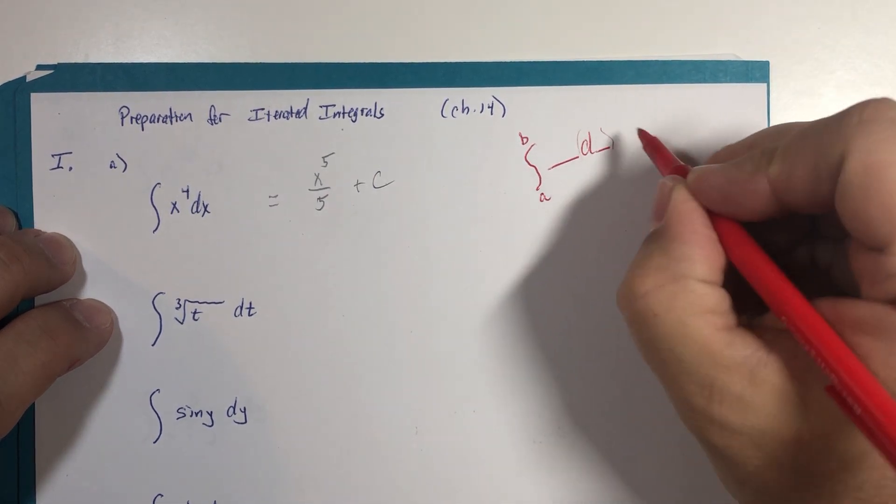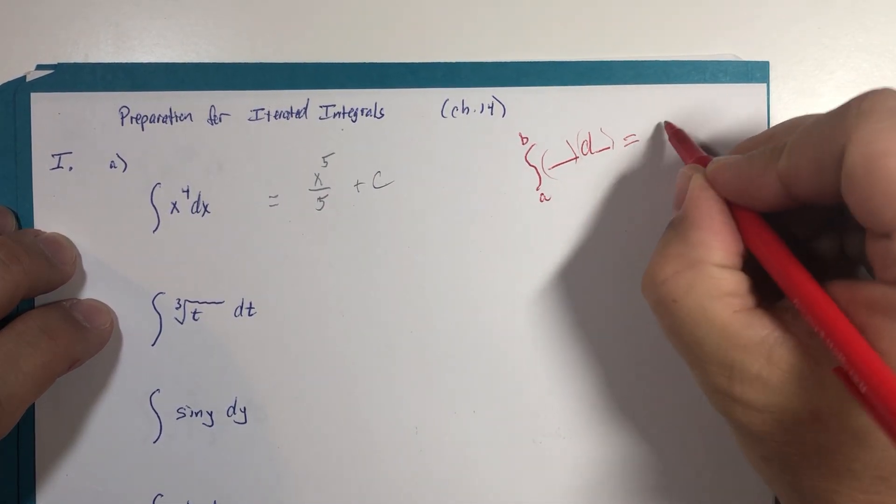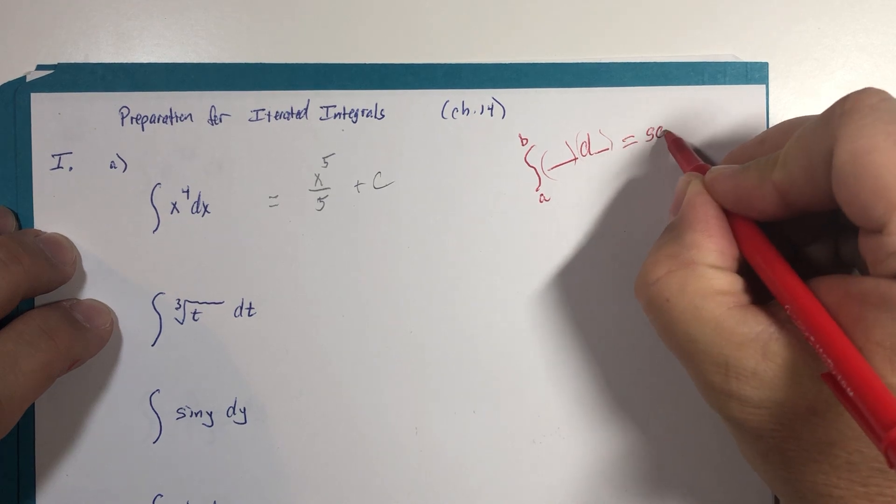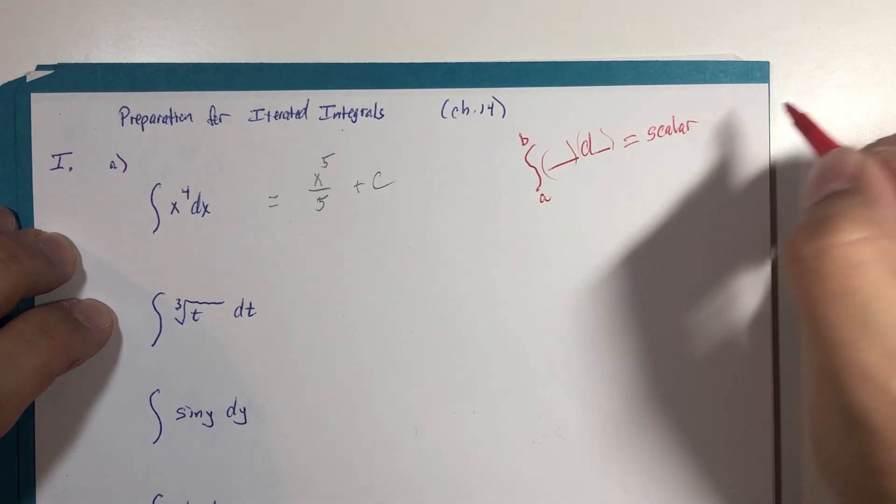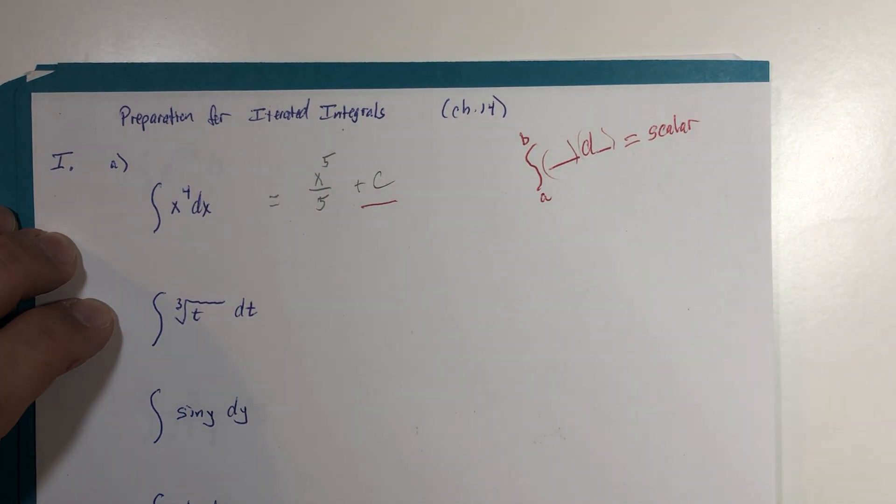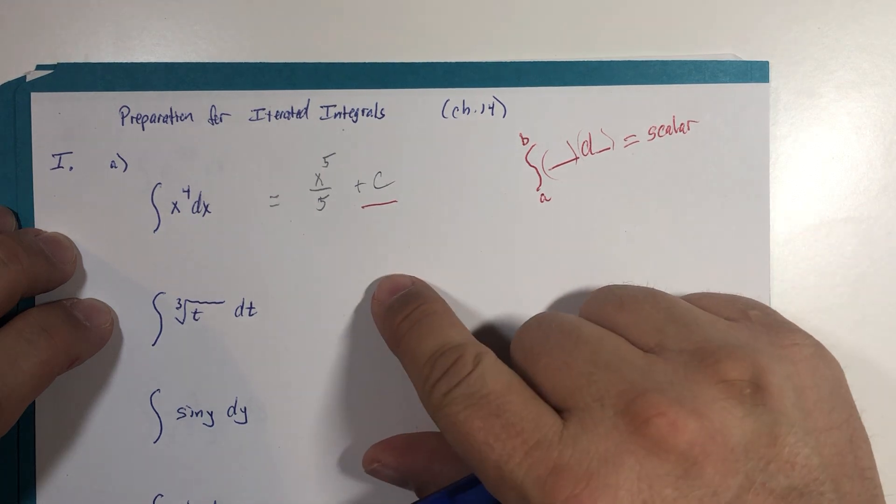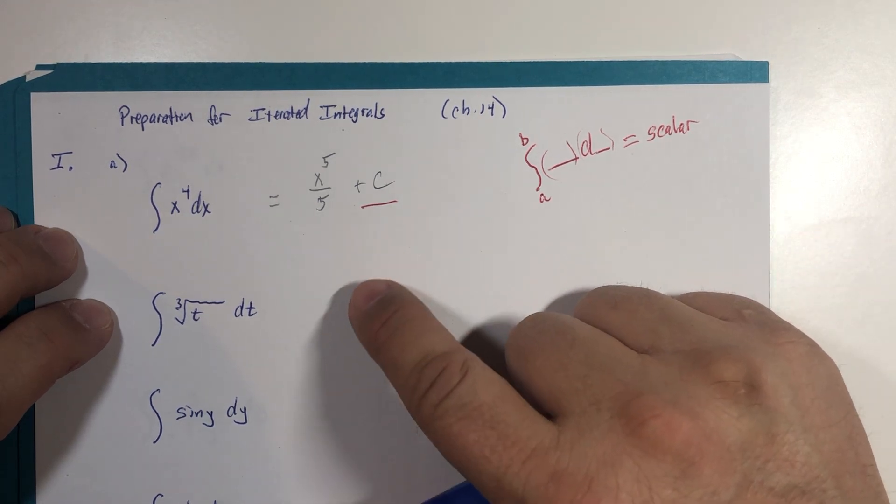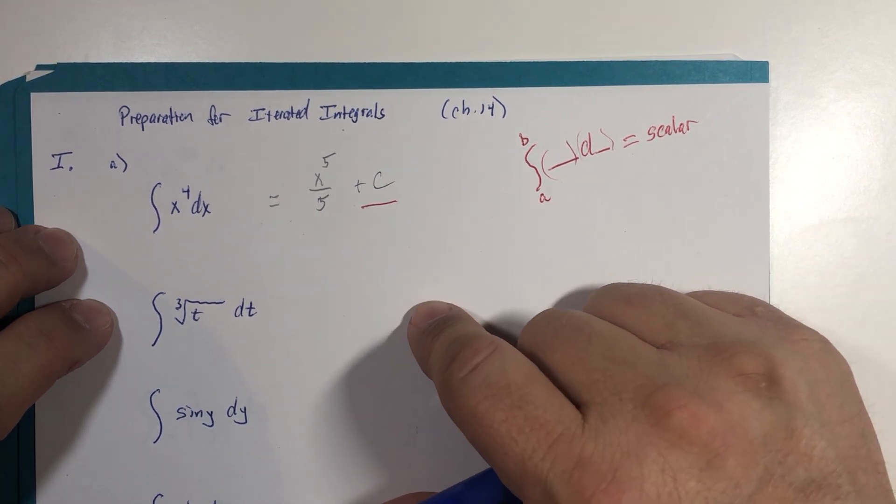And we will be getting numerical values as we've learned to call them scalars. We're not going to be worrying about the plus C constant, so for the sake of expediency I am going to forgo adding the plus C constant, but just know in problems like this it would be there.